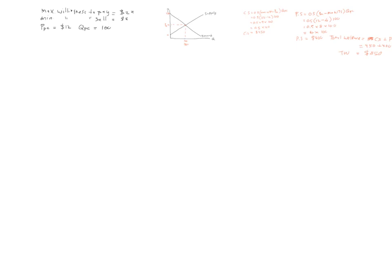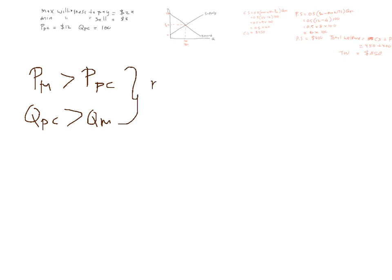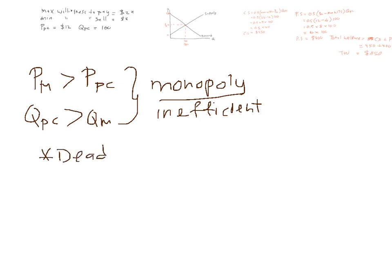Now, comparing this to the monopoly outcome: under monopoly, price will be higher than under perfect competition, and quantity under perfect competition is higher than under monopoly. We know this leads to an inefficient outcome under monopoly — it will be inefficient, which means there will be deadweight loss, and because there's deadweight loss, total welfare will fall.